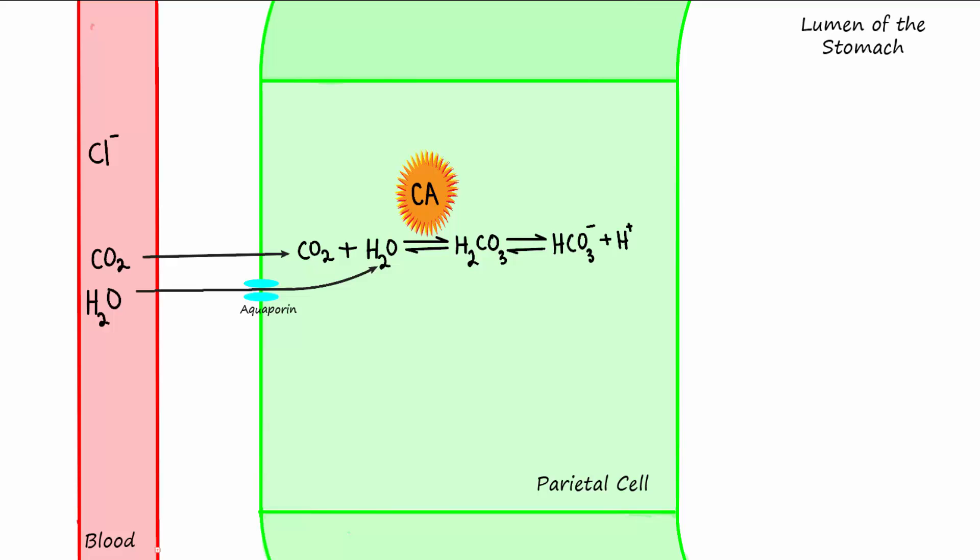The hydrogen ions are then pumped across the apical membrane of the parietal cell into the lumen of the stomach by way of a hydrogen-potassium pump that requires ATP for its fuel. Lots of hydrogen ions in the lumen of the stomach is what gives the stomach its high acidity or low pH, even down to 1.